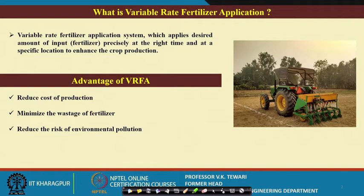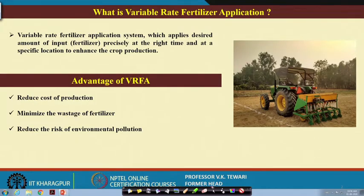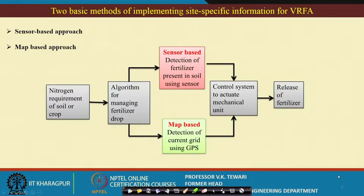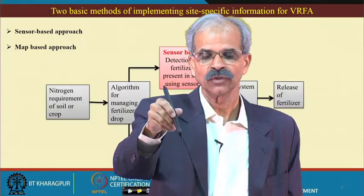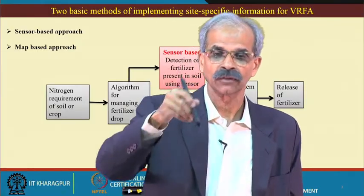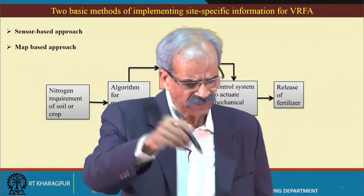We would like to apply fertilizer at varying rates at different locations in the field. There are two basic methods of implementing site-specific information for variable rate fertilizer application. One is the sensor-based approach: take a sensor into the field, and wherever the sensor tells us the value is less than a particular threshold, we record and apply immediately on the go.